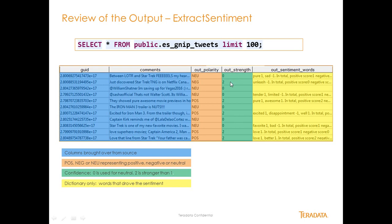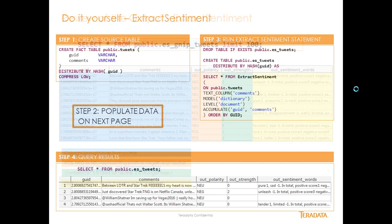The out strength field is basically a confidence level. A zero is neutral, a one is weaker than a two, and a two is stronger — but both are stronger than a zero. Then there are the out sentiment words, which are the words from the dictionary contained within my comments that help to derive the out polarity and the out strength.